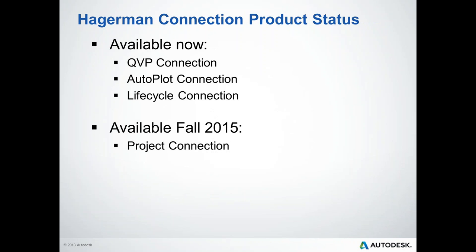Currently available products are QVP Connection, AutoPlot, and Lifecycle Connection. Project Connection is due for release this fall and still under development. We're having a webinar specifically on Project Connection and related topics — including working with Autodesk Buzzsaw for outside-the-firewall collaboration with outside engineering firms and construction companies — on October 1st. If you're interested, go to our website and sign up.